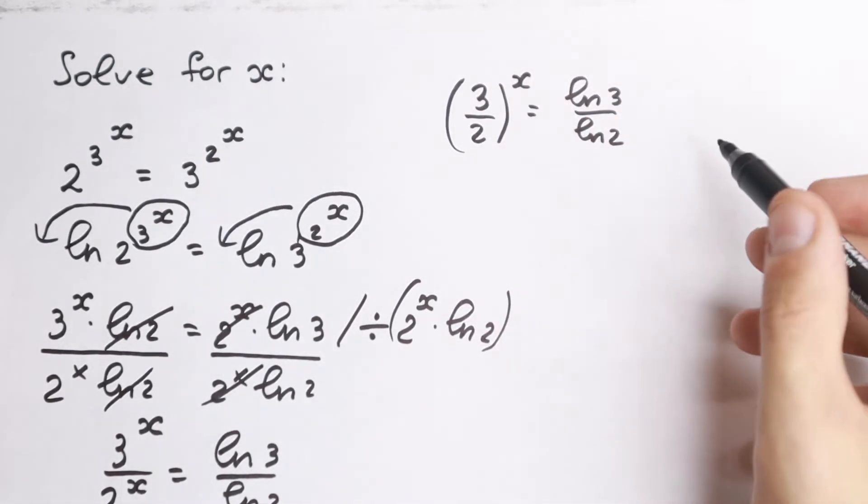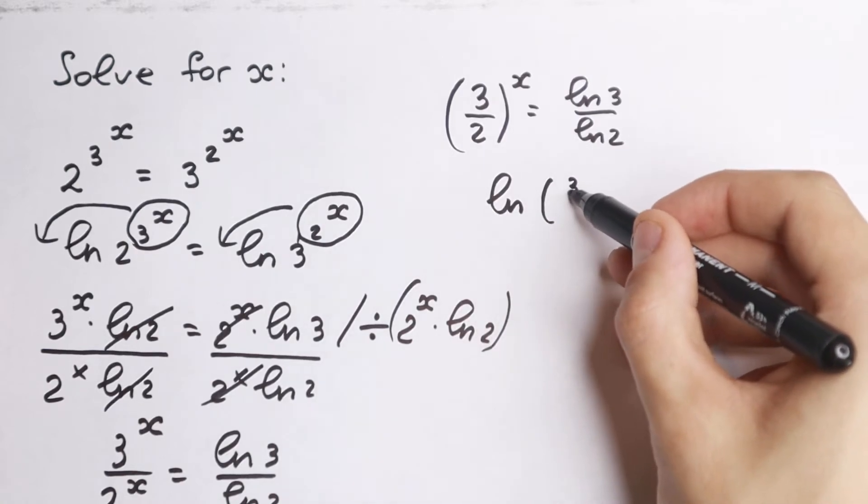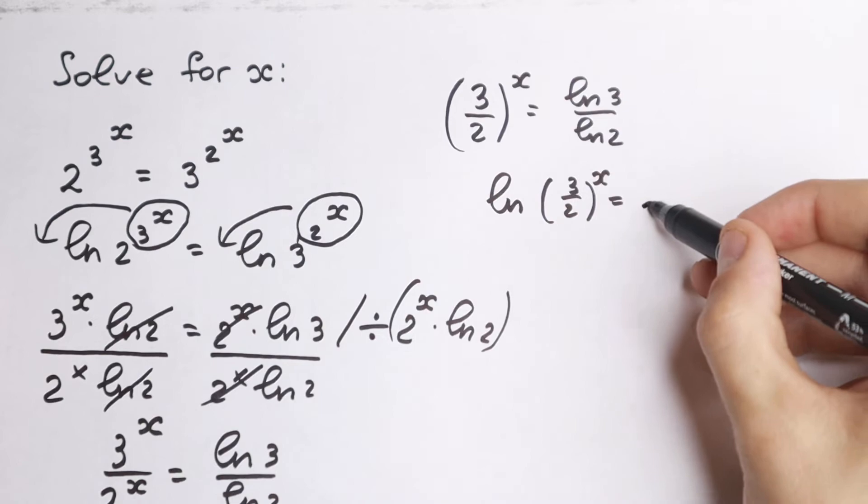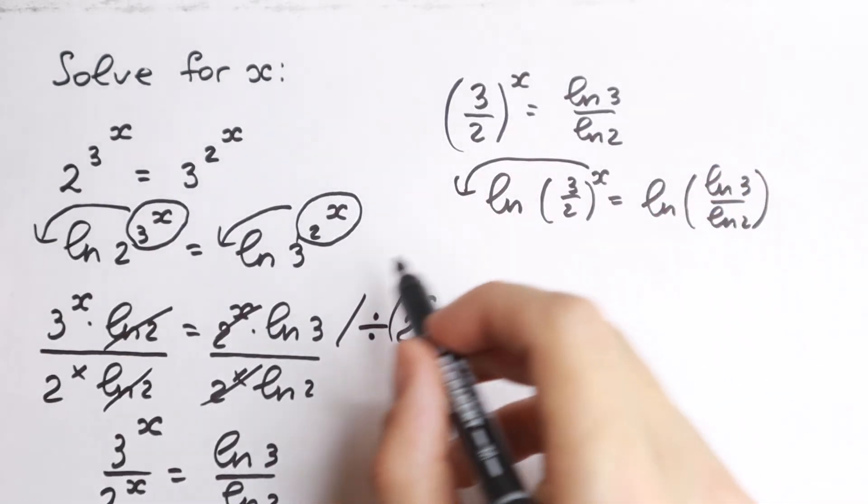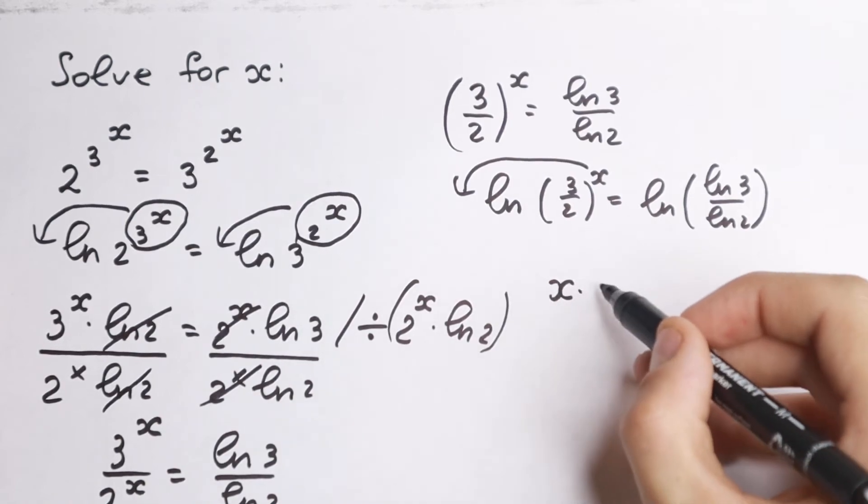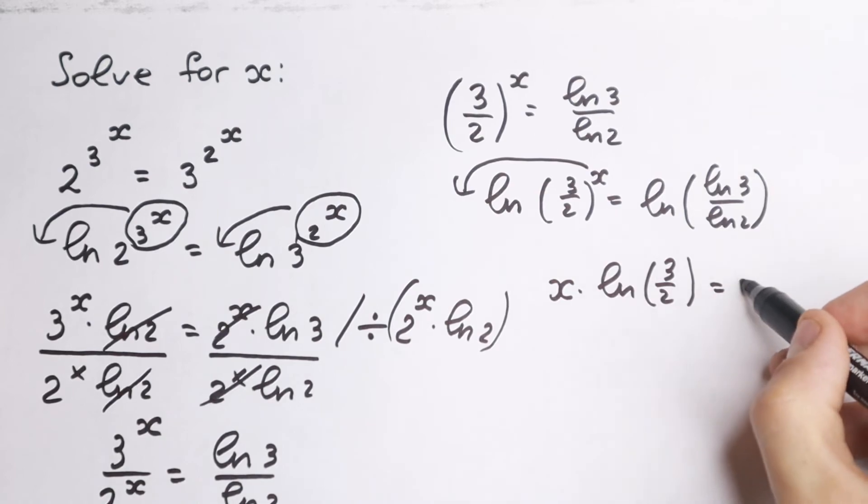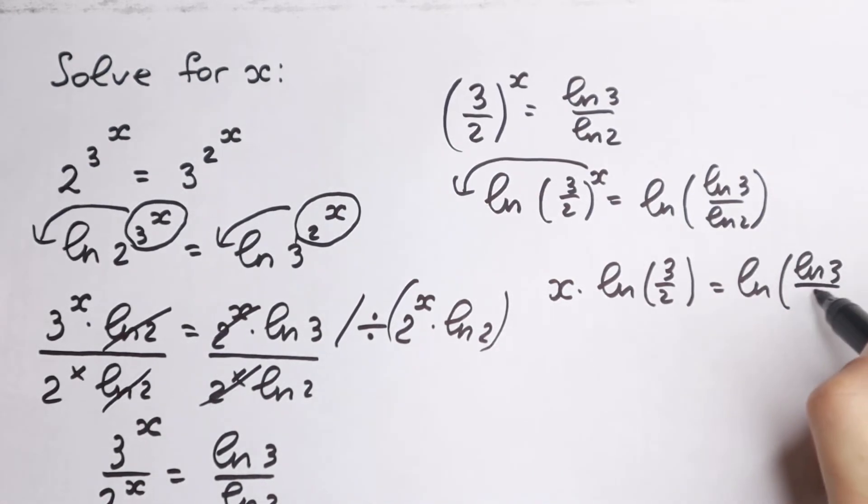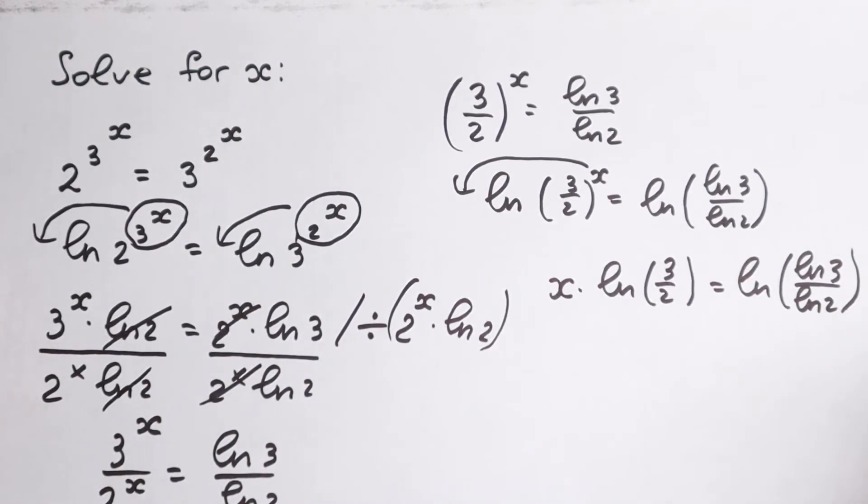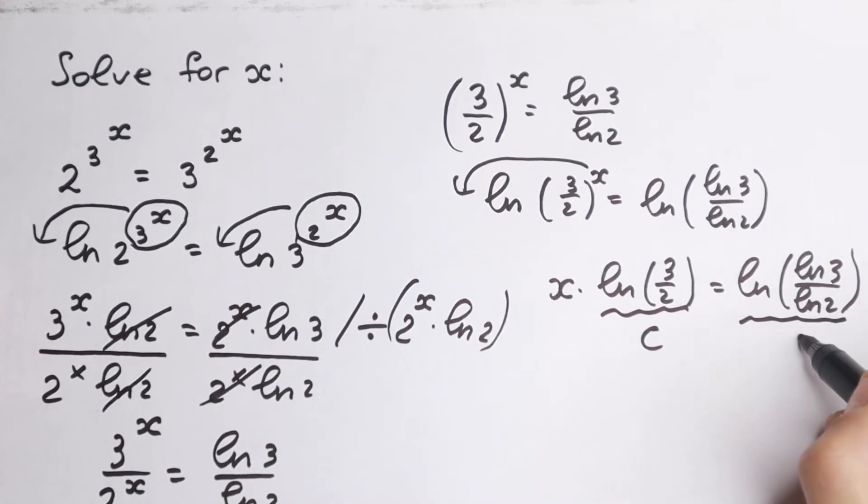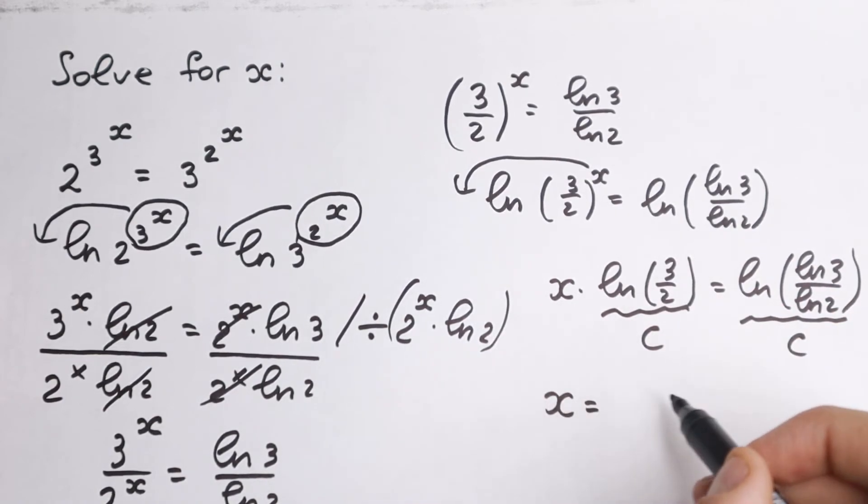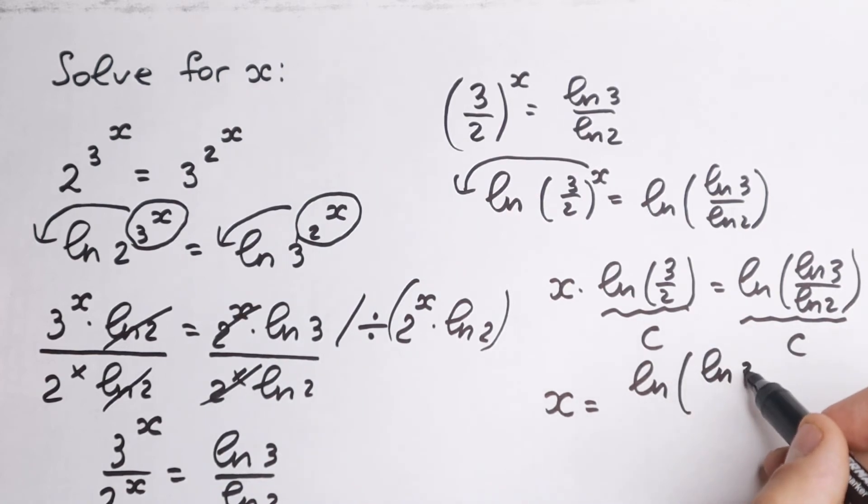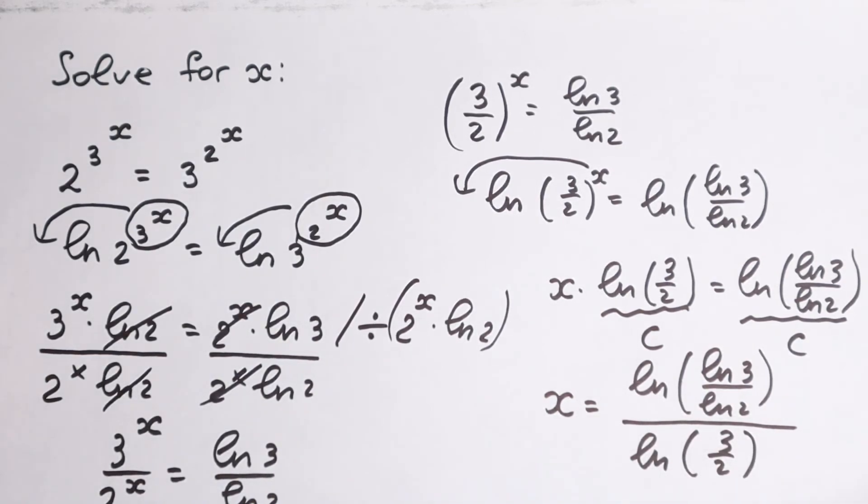And right now the last step. We have x right here, so we need to take natural log one more time. We have natural log of this expression 3 half to the x equal to natural log of this, natural log 3 over natural log 2. This is the constant. And right now this x goes right here, the same as in the beginning with the log property. So we have x times natural log 3 half equal to natural log of natural log 3 over natural log 2. This is a constant, this is great. So let's divide both sides by this constant. If we divide from here we can cancel and write it in a denominator on the right hand side: natural log of natural log 3 over natural log 2, all over natural log 3 half. And this is our answer.